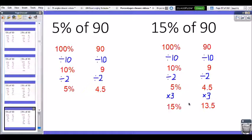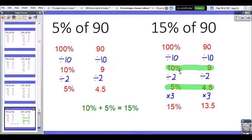Another way you could have done it, you could have said, well, 10% plus 5% gives me 15%. So 9 add 4.5 gives me 13.5. So either one of those strategies is equally fine.